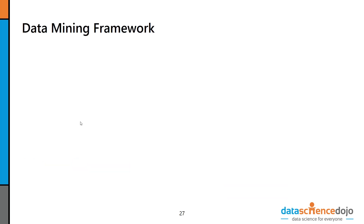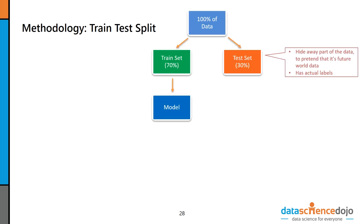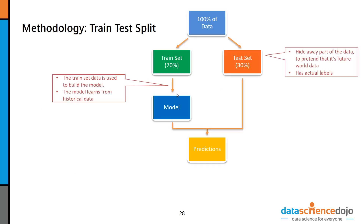Let's go back to the data mining framework and remind ourselves where we are. In the last video, we set up a train test partition, so we have model-ready data. The 70% of the data will be the model-ready data. Today we're going to select an algorithm to train on, then build ourselves a model, and leave the evaluation for next time. We're right here in the methodology - we're going to build our model, and for the most part we're going to ignore the test set today. It's not until predictions that we care about the test set.